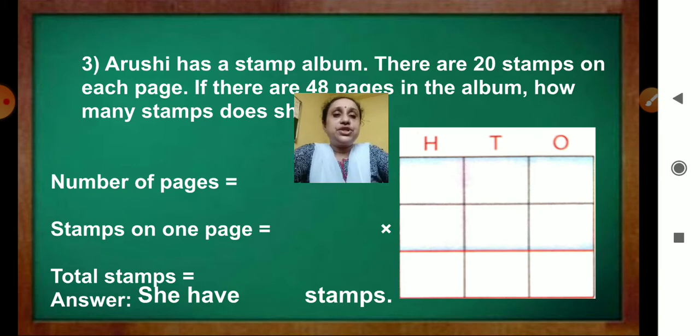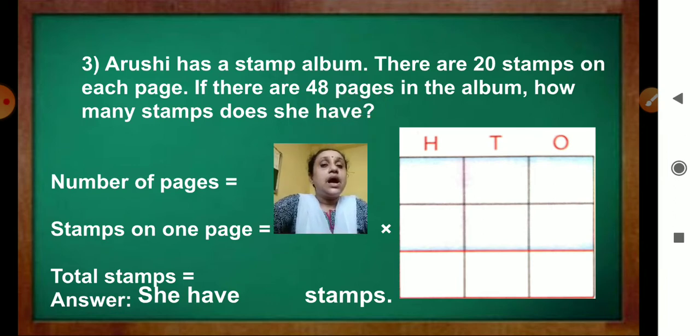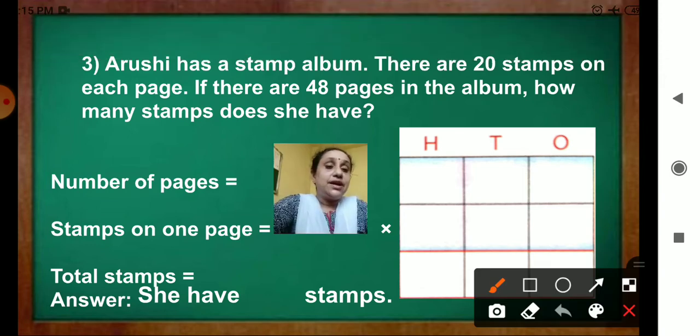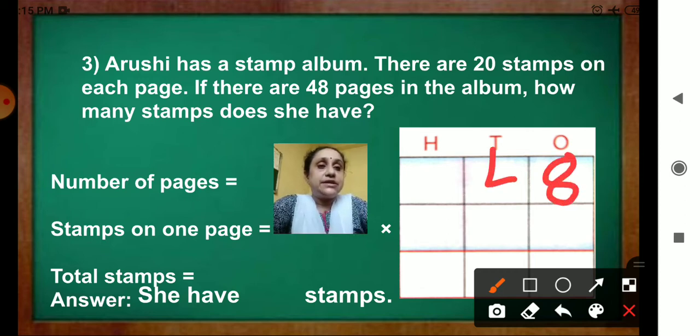Now question 3. Arushi has a stamp album. There are 20 stamps on each page. If there are 48 pages in the album, how many stamps does she have? Now number of pages. How much it is written? 48. Write 8 and 4 here. Stamps on one page, 20. 0 and 2.